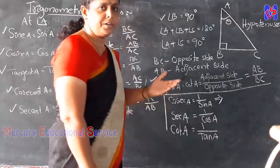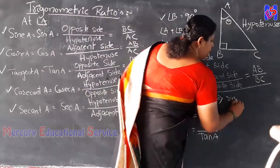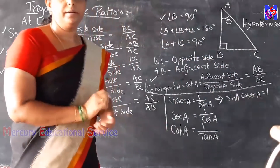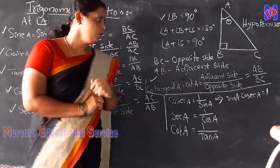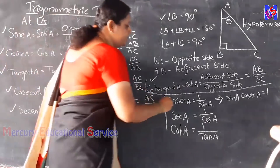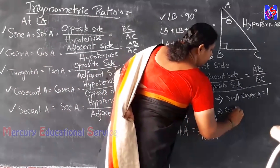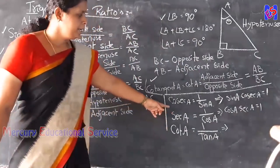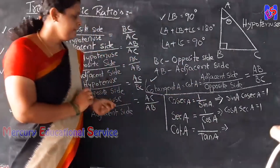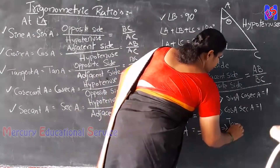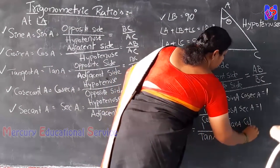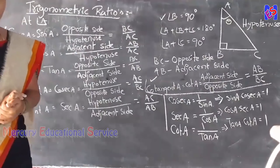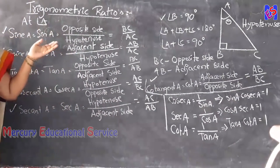From these reciprocal relationships, we can write: sin A multiplied by cosecant A equals 1; cos A multiplied by secant A equals 1; and tan A multiplied by cot A equals 1. We can use these formulas in any problems.